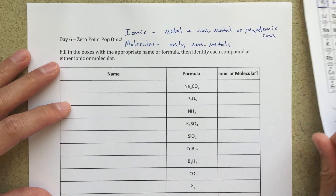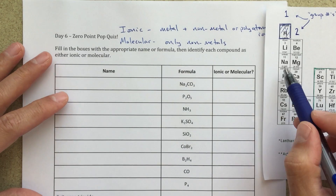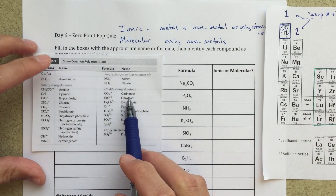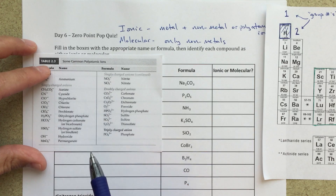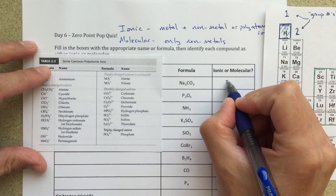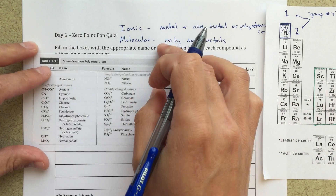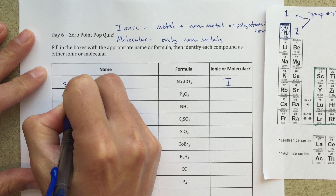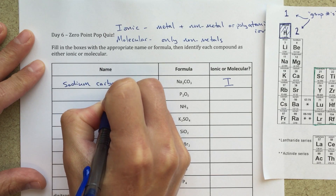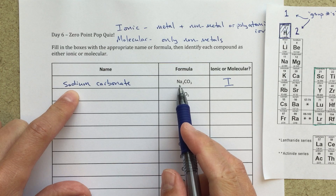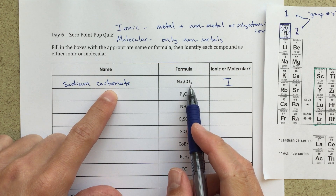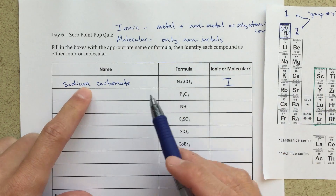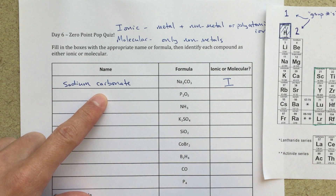Sodium carbonate — right away I'm looking at sodium, which is a group one metal. Carbonate, CO3, is on my list of polyatomic ions with a 2- charge. So this is going to be an ionic compound. To name it, I just write sodium carbonate — sodium because Na is sodium, and carbonate because CO3 2- is carbonate. Sodium is always going to have a plus one charge since it's in group one, and carbonate always has a minus two charge from our polyatomic ion list.